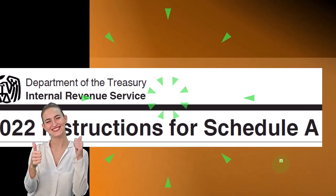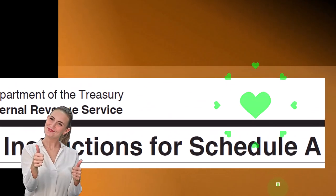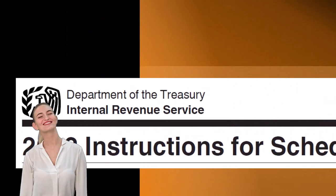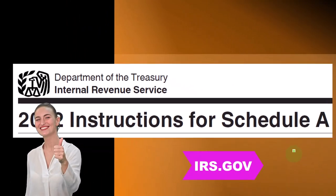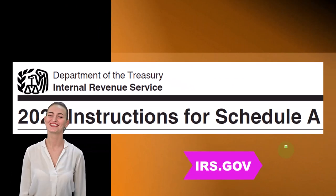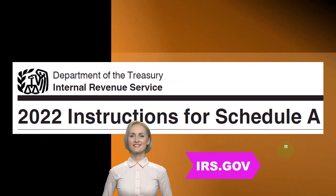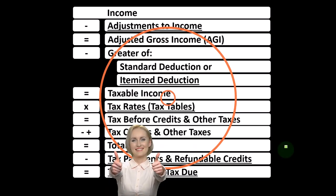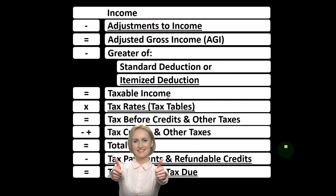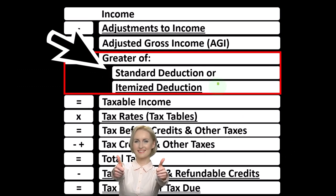Most of this information comes from the Schedule A Tax Year 2022 instructions, which you can find at the IRS website, irs.gov. Looking at the income tax formula, we're focused down here at the itemized deductions.